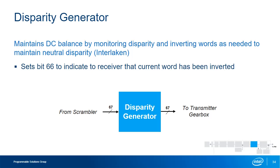The disparity generator is used in the Interlaken protocol and monitors the output of the scrambler to maintain neutral disparity. Even with frame-synchronous scrambling, certain bit patterns could cause the scrambler output to be all zeros or ones, affecting DC balancing. If the disparity of the current word matches the current running disparity, the disparity generator inverts each bit of the transmitted word and inverts bit 66 to indicate this inversion has occurred.